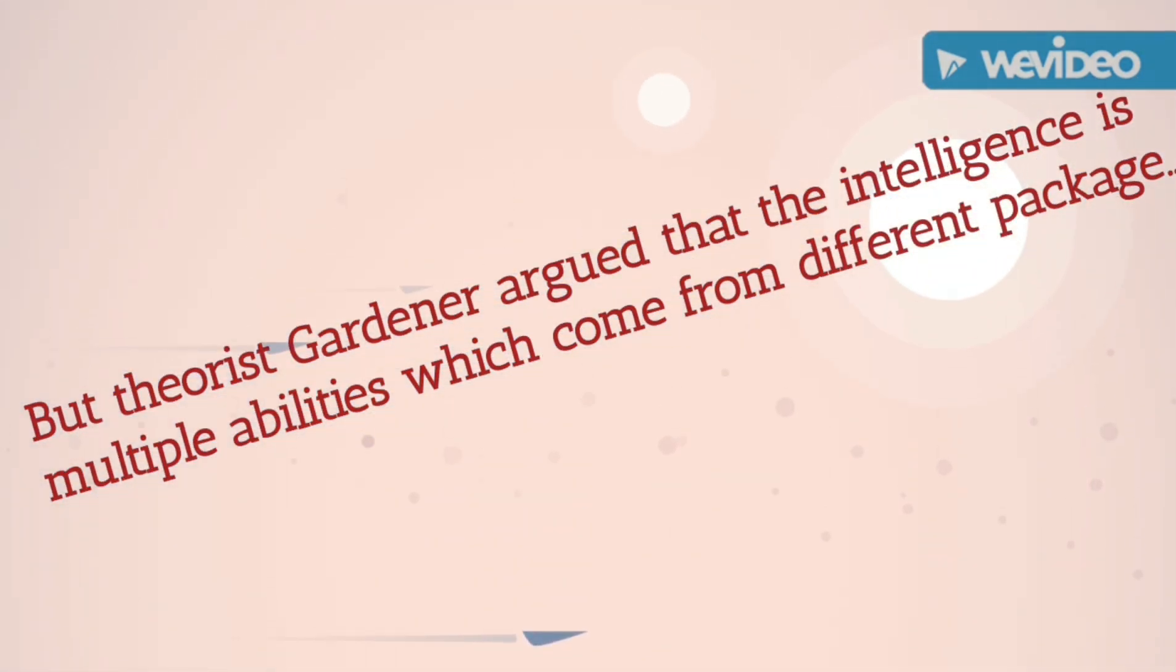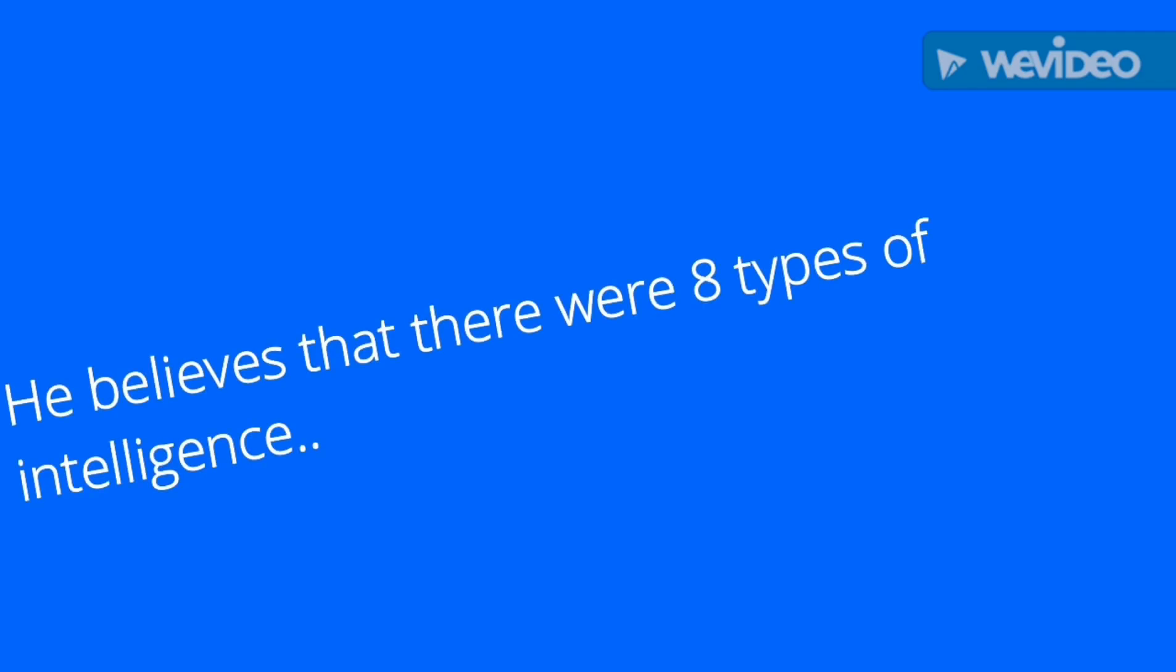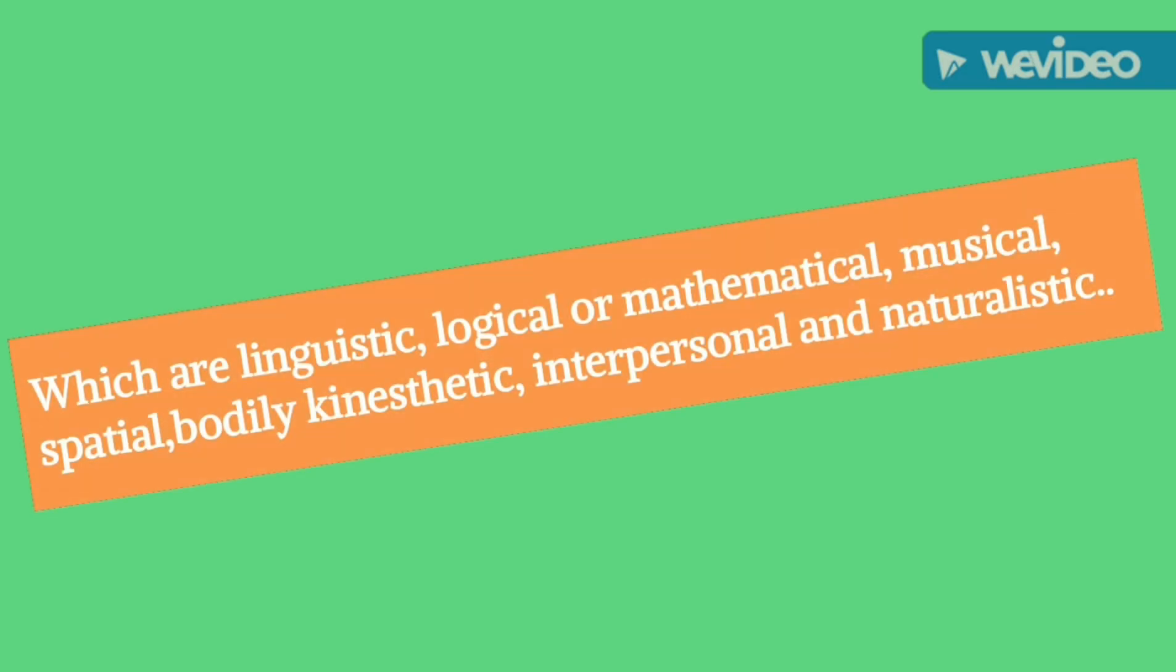But theorist Gardner argued that intelligence is multiple ability. He believes that there were eight types of intelligence which are linguistic, logical or mathematical, musical, spatial, bodily kinesthetic, interpersonal, and naturalistic.